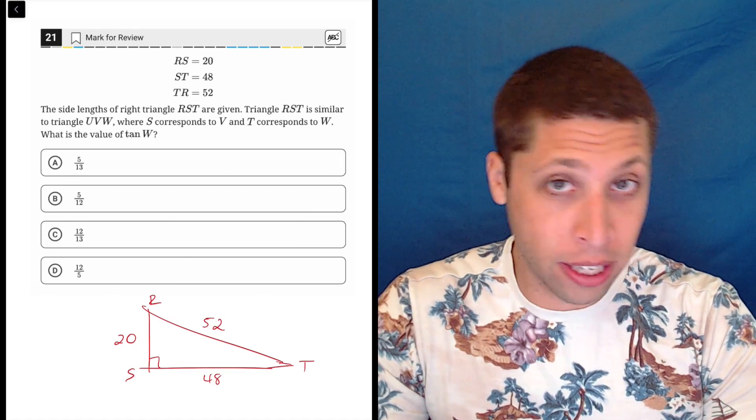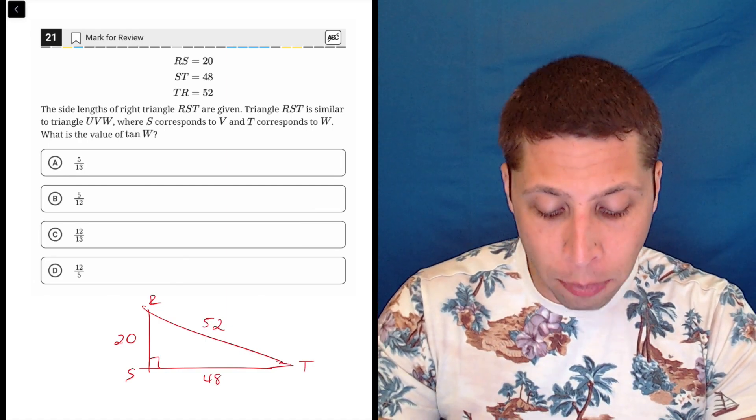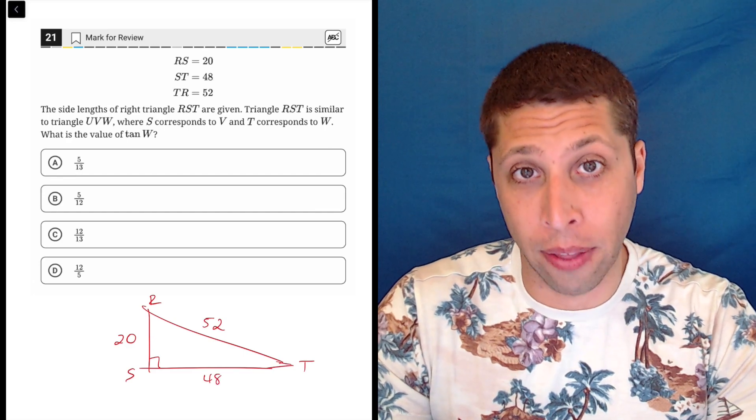But we're not talking about triangle RST, right? We're talking about triangle UVW. So we need to understand how that's going to work too.